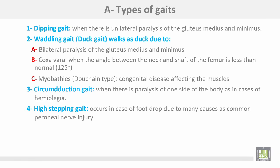Types of gaits. Number one: dipping gait, which occurs when there is unilateral paralysis of gluteus medius and minimus. Number two: waddling gait or duck gait, where the patient walks like a duck due to bilateral paralysis of gluteus medius and minimus, or in coxa vara where the angle between the neck and shaft of the femur is less than the normal 125 degrees, or in myopathies such as Duchenne type congenital disease affecting the muscles.